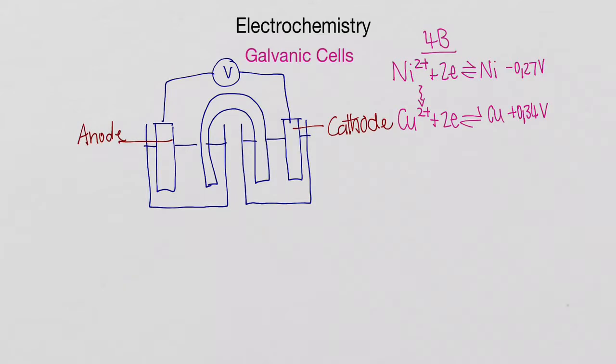So I've written out the two equations from our standard reduction potential tables. I've used 4B - if you're using 4A, it's just the inverse. So over here, our nickel is on top. Our nickel equation is higher than our copper equation on the table.